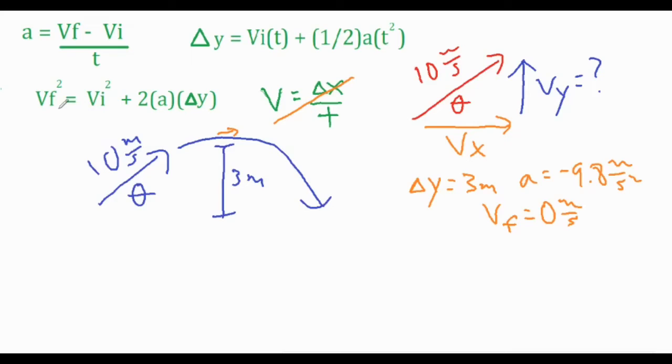It looks like we're going to have to use this formula right over here because that's the only one where we have vf, a, and delta y to find an initial velocity. So let's go ahead and plug into that formula and see what we get.